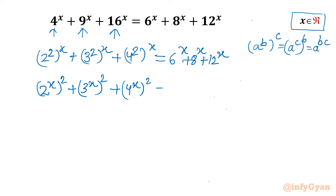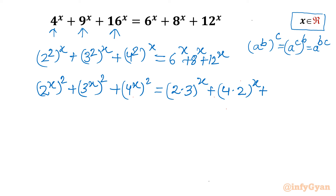On the right-hand side, I can write 6 as (2·3), 8 as (2·4) or (4·2), and 12 as (3·4). So the right-hand side becomes (2·3)^x + (4·2)^x + (3·4)^x.